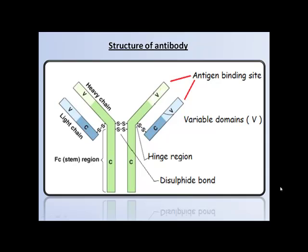The region holding the arms and stem of the antibody is termed the hinge. Each chain — light and heavy — includes two distinct regions: the variable region and the constant region. The variable domains of H and L-chains in the arms are called antigen-binding fragments, i.e., Fab fragments. The stem of the antibody carries constant domains of heavy chains called the crystallizable fragment, i.e., Fc portion.